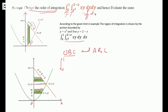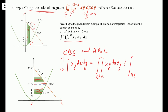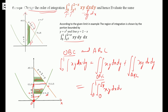So the integration is divided into two portions. The double integral equals the integral over region OBC of xy dx dy, plus the integral over region ABC of xy dx dy. For region OBC, X varies from 0 to √y, and Y varies from 0 to 1, written as xy dx dy — because we change the order of integration, first integrating with respect to X, then Y.